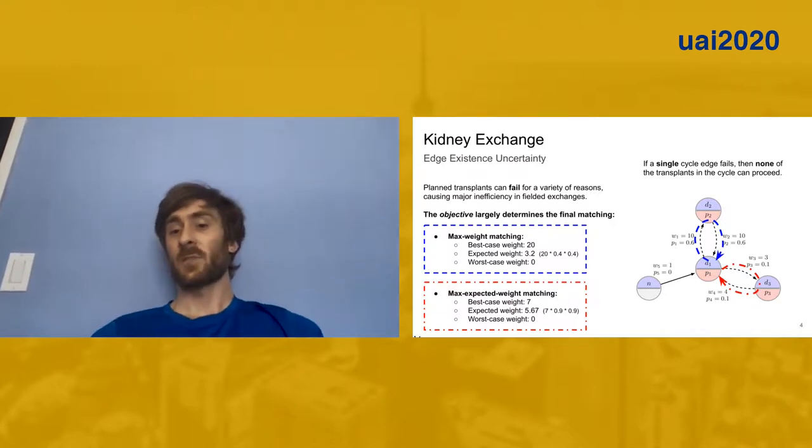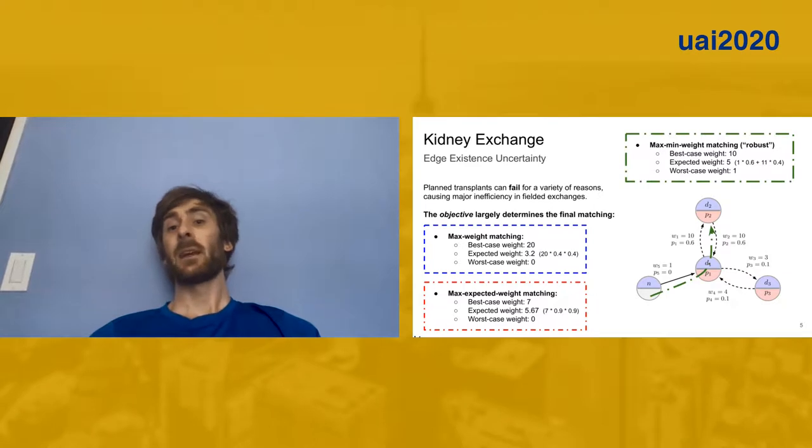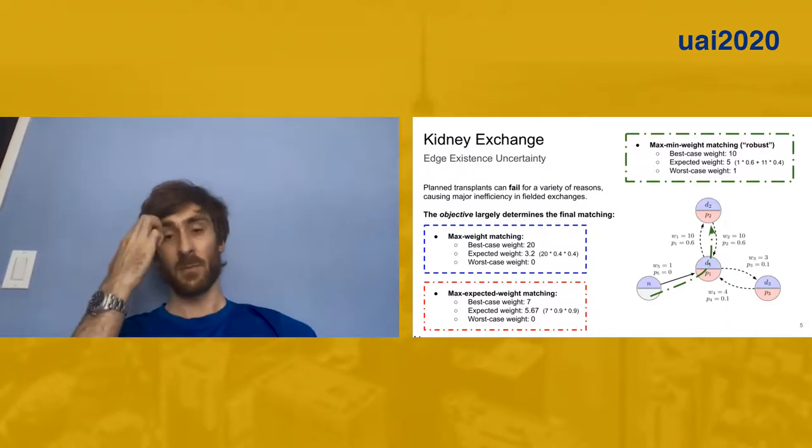We might also consider a third objective, which is the max min weight matching, or we might call this a robust matching, where we want to maximize the worst case possible weight. In that case, we would choose this NDD edge down here on the left, which has a zero probability of failure, but only a weight of one. In the best case, this matching would give us a weight of 10. Its expected weight is about half of that, five. And in the worst case, only this deterministic edge with probability of failure zero would execute. And we have a worst case weight of one. Part of the trick in designing a kidney exchange algorithm is choosing which objective we want to optimize. That is one of the problems we're addressing today.